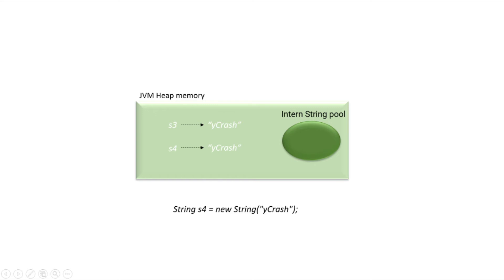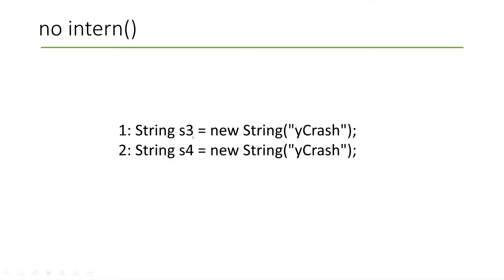It is your developer responsibility to invoke the intern operation. Now I'm going to ask you a question. Let's go back to this code: s3 equals new String 'ycrash', s4 equals new String 'ycrash'. If I say System.out.println(s3 == s4), what will be printed? I'm going to use a double equals operation — so will it print true or false for this program?